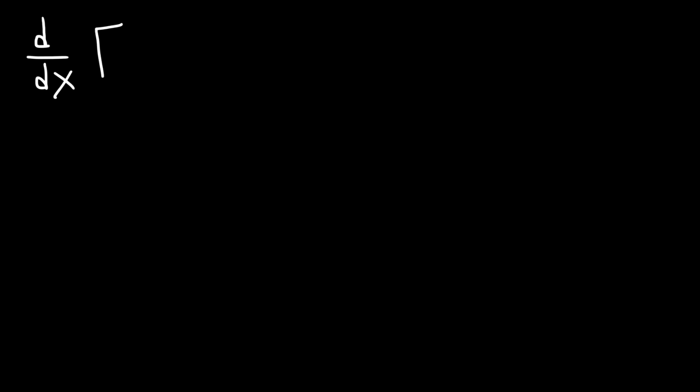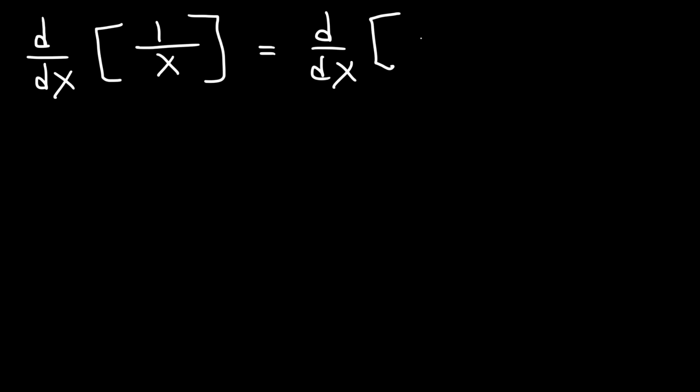In this lesson we're going to talk about how to find the derivative of a rational function. Let's differentiate 1 over x. First we need to rewrite the expression — this is the same as x to the minus 1.